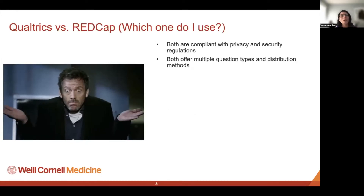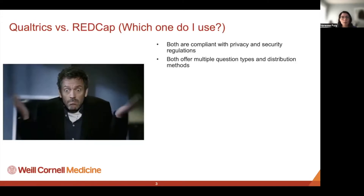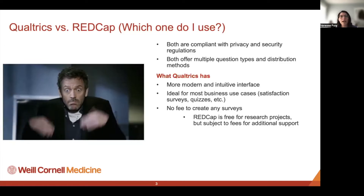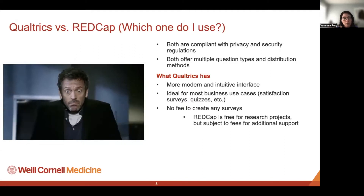We have Qualtrics and REDCap, and we get a lot of questions about which one to use. Both tools are compliant with privacy and security regulations, so if you need to collect PHI, you can use either one. They both offer a lot of different question types and distribution methods. Qualtrics has a much more modern interface — it's easier to put together a survey, and it looks cleaner from the end user's perspective. It's ideal for a lot of business use cases like satisfaction surveys, quizzes, or RSVPs.